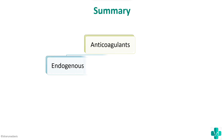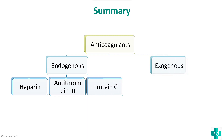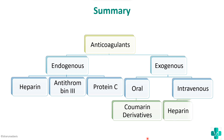To summarize: anticoagulants can be endogenous or exogenous. Endogenous examples are heparin, antithrombin 3, and protein C. Exogenous anticoagulants can be oral or intravenous. Oral examples are coumarin derivatives — vitamin K antagonists such as warfarin and dicumarol — which act to decrease clotting. Intravenous anticoagulants include heparin and hirudin. This question can be asked as part of an essay question or as a short essay itself.